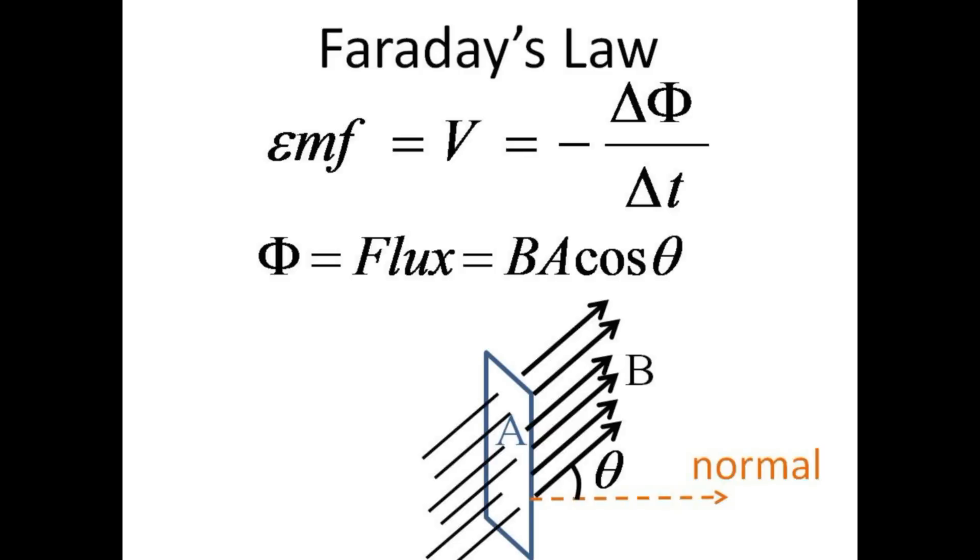In this lab, we will have the B field aligned with the normal. The angle theta will then be 0 and the cosine will thus be simply 1.